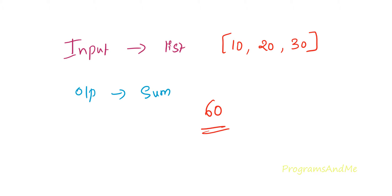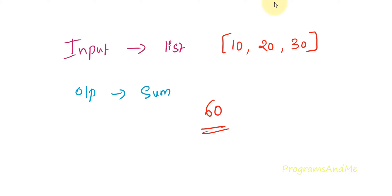In the previous tutorial, while calculating the average of numbers in the list, we used the built-in sum function to calculate the sum. If you want to find the sum of numbers in any iterable you can use the sum function, but here we need to write this program without using the built-in function.